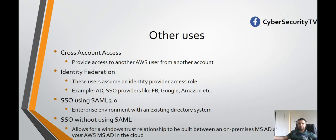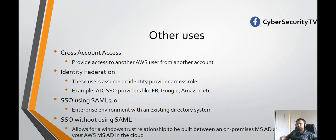The third option is SSO using SAML 2.0, which is mostly suitable for enterprise environments with an existing Active Directory system. The user does not have to create an account on AWS — AWS simply inherits the role or access control from Active Directory and authenticates the user. The last option is SSO without SAML, which requires a trust relationship to be built between an on-premises Microsoft Active Directory and your AWS Microsoft Active Directory in the cloud.